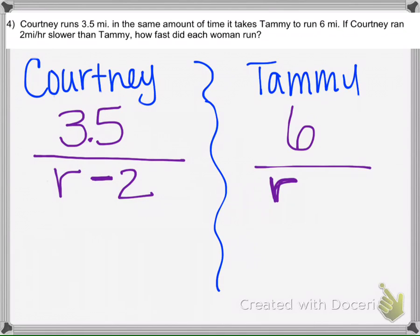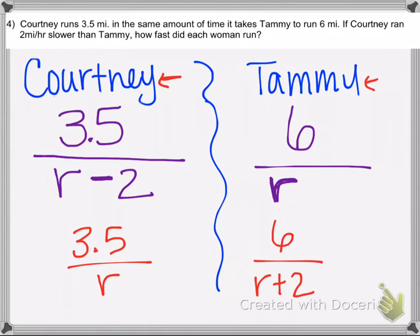You could also have this and it would also work. You could have Courtney be R and then you could have Tammy, if she's 2 slower, then she's 2 faster. So you could also have this and then you're going to set them equal. So either one will get you the same solution.